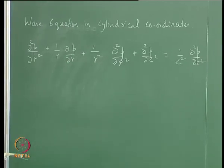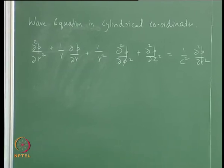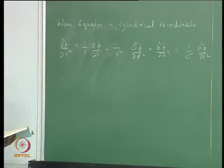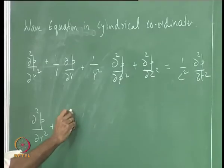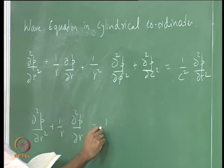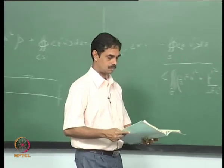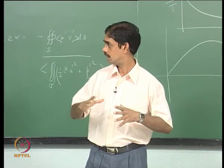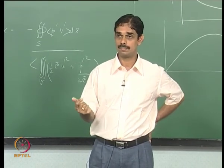This is the wave equation in cylindrical coordinates. I will not derive it — you can either expand del-squared and write the solution, or derive it from scratch. I just want to look at the radial variation, so I assume cylindrical symmetry and remove the phi dependence. I also remove the dependence on Z, so we just look at the R part.